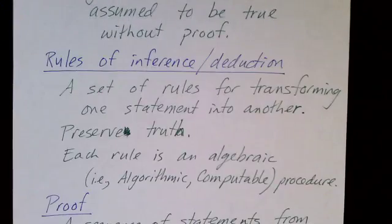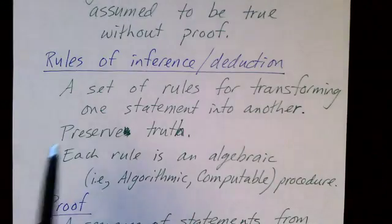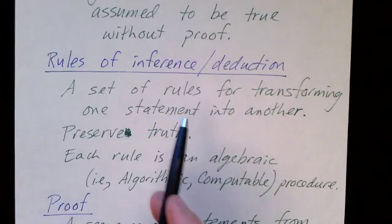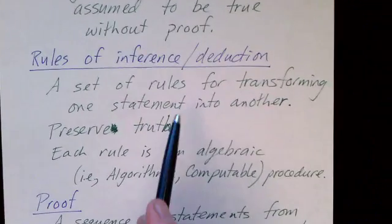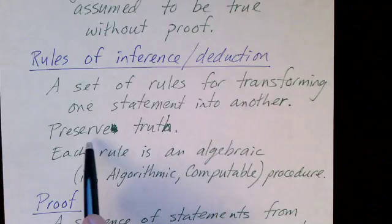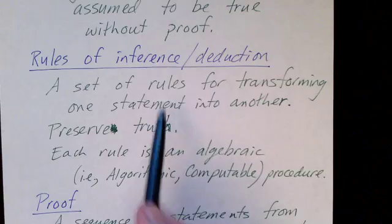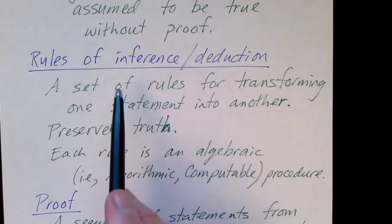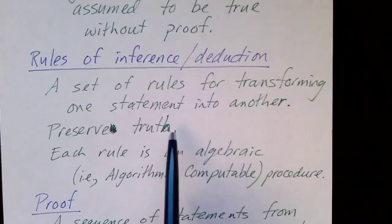And next we have a set of rules for transforming one statement into another. And these transformations preserve the truth of the statement. So if we start with true statements, we apply our rules of inference and we get more true statements.